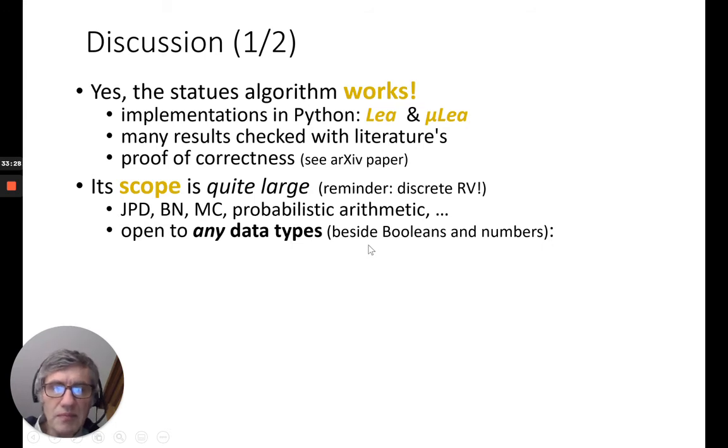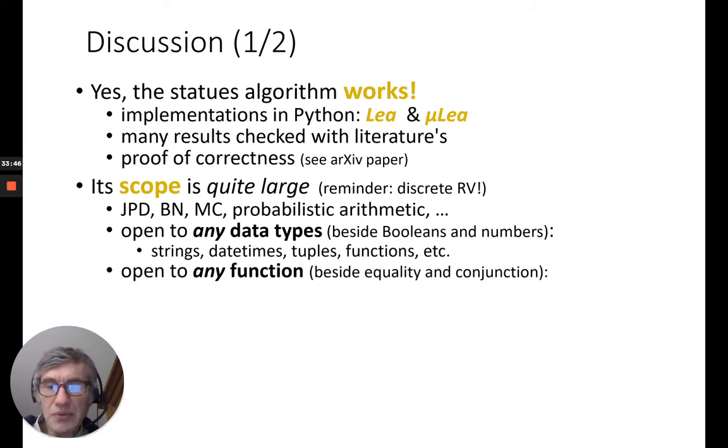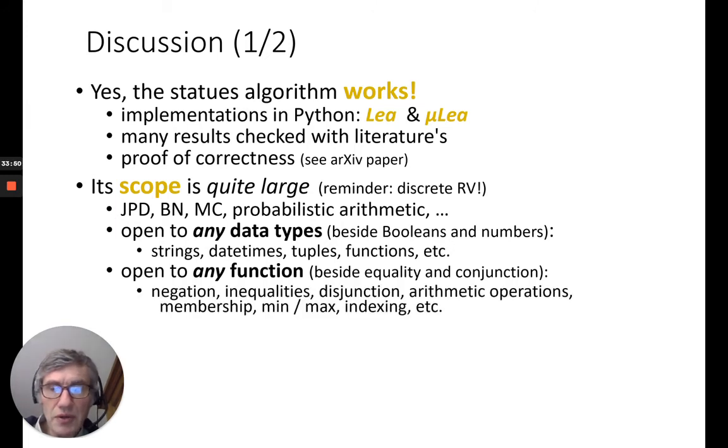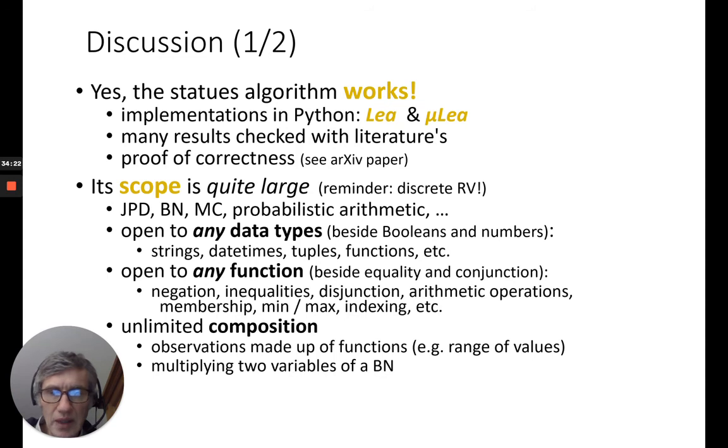It's open to any data types, besides booleans and numbers. I mean by that you can use strings, data times, tuples, functions, even matrices, as domain of your probability distribution. It's open to any function also, any pure function, besides equality and conjunction. You can do negation, all the logical operator, arithmetic operator, membership, etc., and all these can be composed without restriction. So, as I showed before, you can have observations made up of functions, like you observe that a value, random variable, random variable is within a range of values. You can multiply two variables of a Bayesian network and put it in an inequality of the observation, and many more.